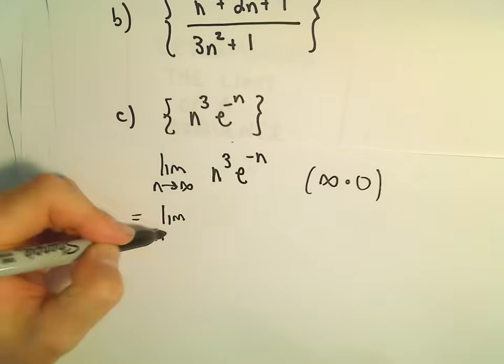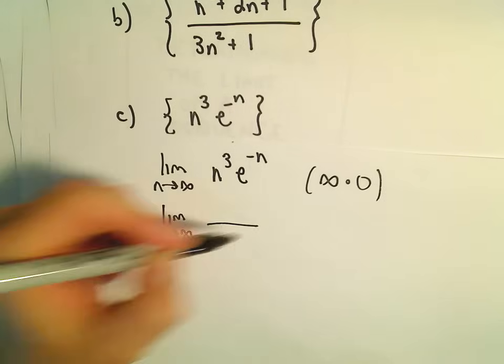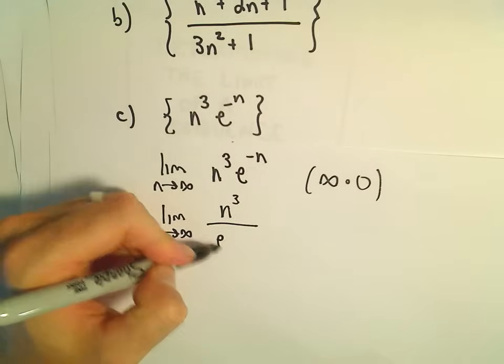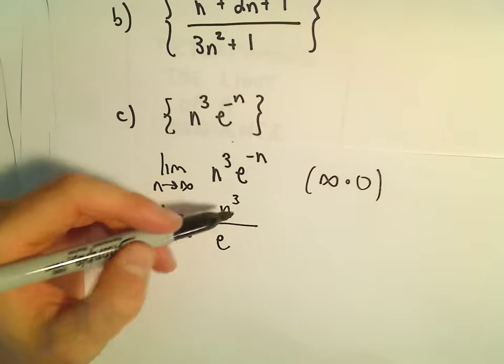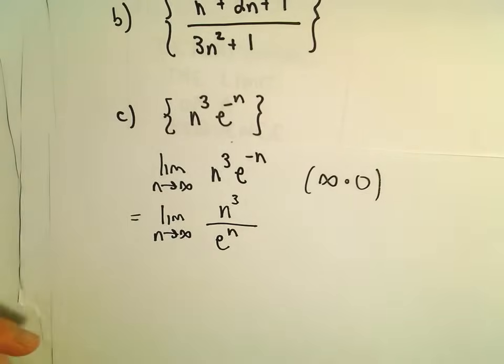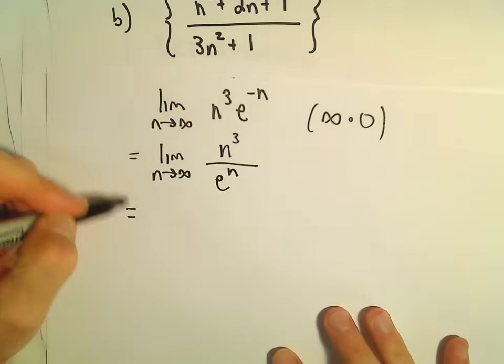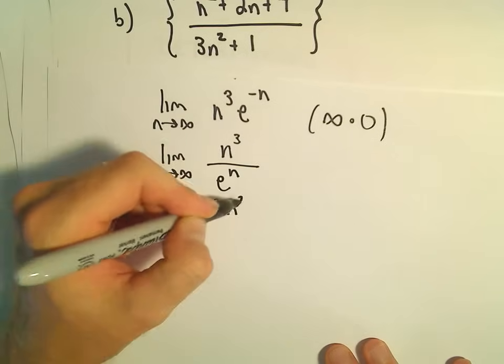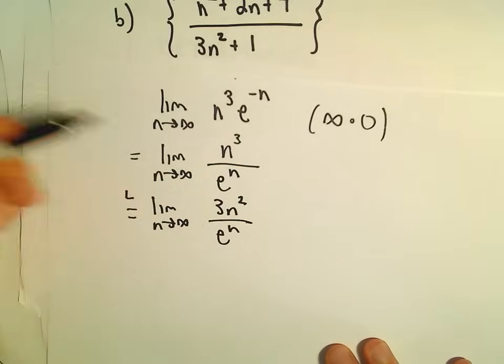So you may have to use L'Hopital's rule on these problems. I'm going to leave the n cubed in the numerator. I'll put the e to the negative n in the denominator. But then that would be written as just e to the n. So now if we use L'Hopital's rule, we'll get 3n squared over e to the n. So the derivative of the top and the derivative of the bottom.